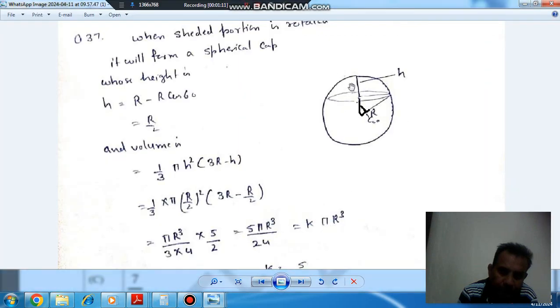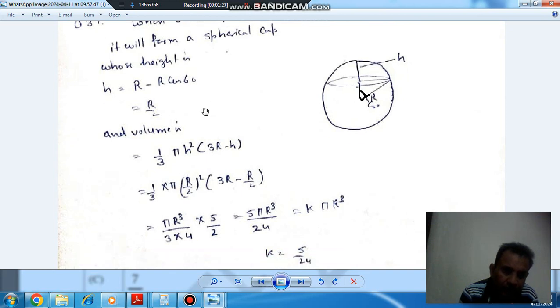The height is h. Then this height can be calculated because this angle is given, that it is 60 degrees. So that height is R minus R*cos(theta), or cos(60), that is R/2. So h is R/2, and the volume of that spherical cap is given as (1/3)*pi*h^2*(3R-h).